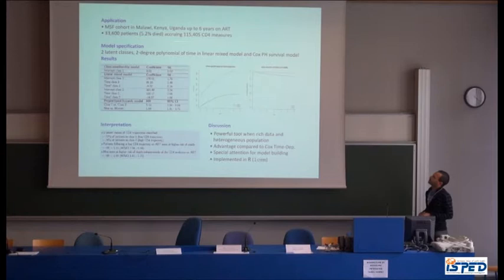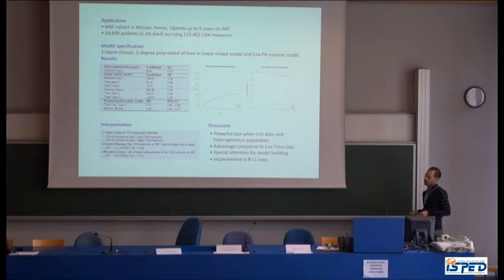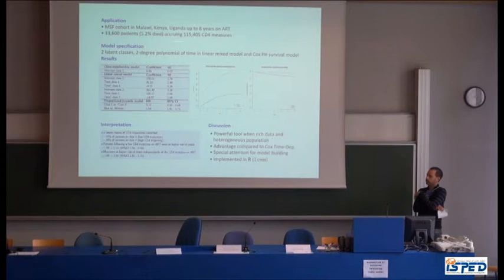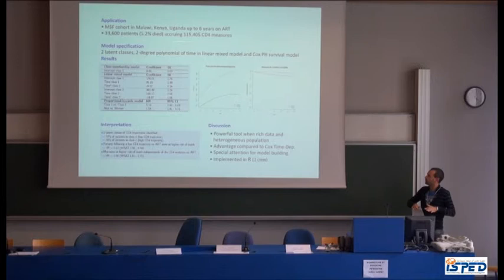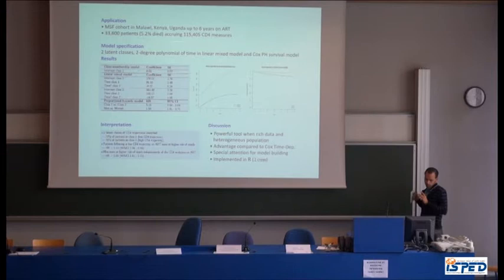An example uses MSF cohorts in Malawi, Kenya, and Uganda: up to 36,000 patients for up to six years on ART, with 5.2% of patients having died, and all these patients include more than 100,000 CD4 measures. The idea is to study the impact of the evolution of this sequence on survival. For this specification, we use two latent classes for the latent model, a polynomial degree 2 for the longitudinal linear model, and a Cox proportional model for the survival model.